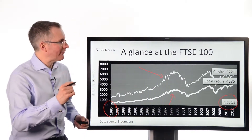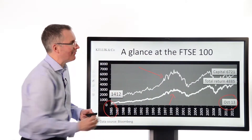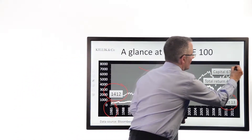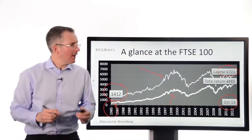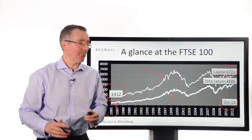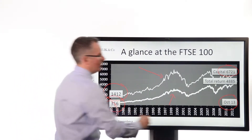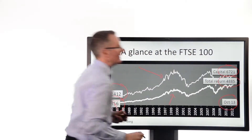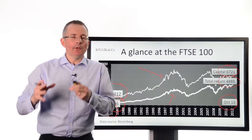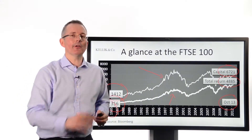What is that return? For the capital-only version of the index, not factoring income, 1412 becomes 6721 — almost five times. Not bad. But look at the total returns: 356 turns as an index into 4885 — getting on for 14 times the starting level. So you can see you get a bit less volatility with income reinvested, and the total return can be pretty impressive.